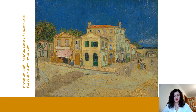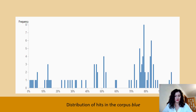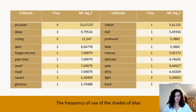The most frequent collocation is 'yellow house,' which is the house of his dreams, where the artist wanted to create a home for like-minded artists. And as already mentioned, one of the key colors in the text of the novel is blue. We encounter a variety of shades of blue, which you can see on this slide.